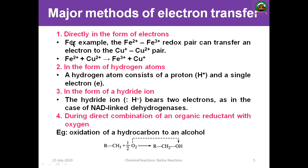The first method is the direct transfer of electrons. For example, ferrous (Fe2+) is converted into ferric (Fe3+). In the redox reaction, Fe2+ interacts with Cu2+. The ferrous ion interacts with the cupric ion, and as a result, the iron acquires an electron and is converted into Fe3+. This is an example of direct electron transfer.